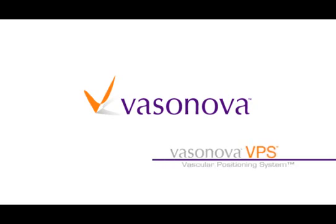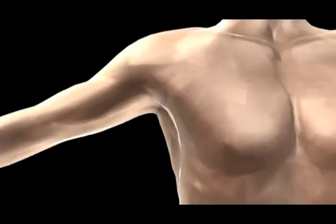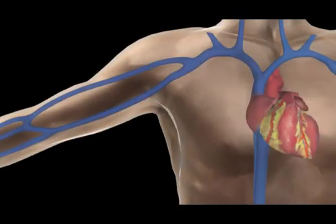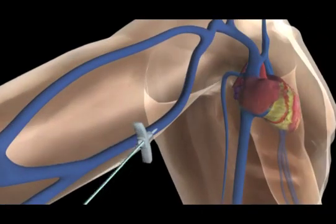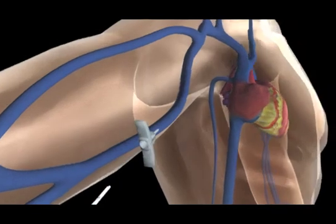The Vasonova VPS Vascular Positioning System is an innovative vascular navigation system with an initial application for accurately and precisely placing peripherally inserted central catheters, or PICC lines. Currently, PICC lines are positioned without a guidance system or with external guidance systems that don't accurately reflect the patient's internal physiology.